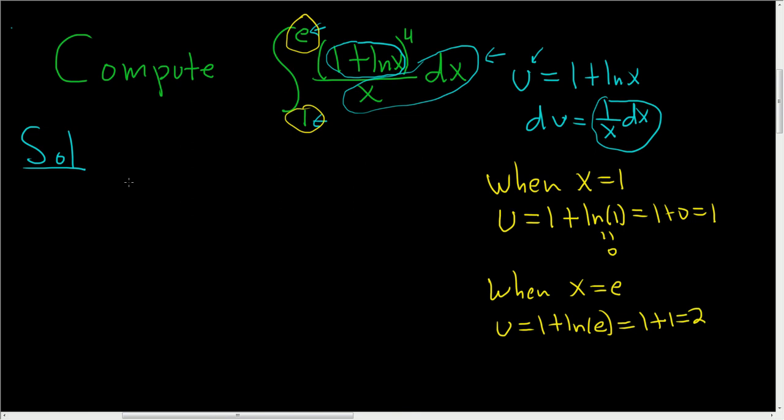Now we're good to go. We have the definite integral. When x is 1, u is 1. When x is e, u is 2. Got to be really careful. And this piece here is u to the fourth, and then we just have du. That cleaned up nice. This is u, and it's being raised to the fourth power, and then this piece here is just du.